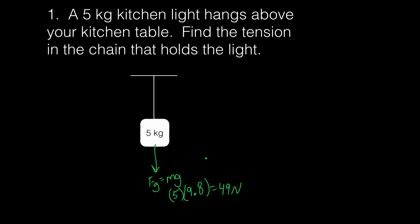We also know that there has to be a force going up. If we remember Newton's first law, it says that an object at rest remains at rest unless acted upon by a net force. This kitchen light is at rest — it's not moving up and down. So in order for it to remain at rest, these forces have to be balanced.